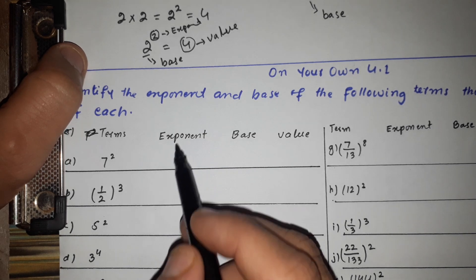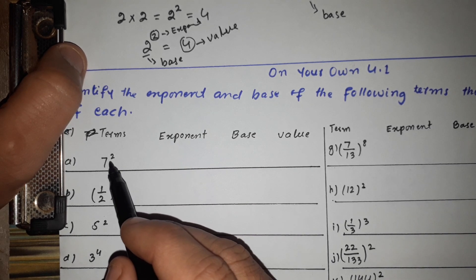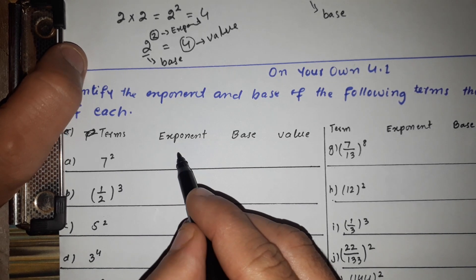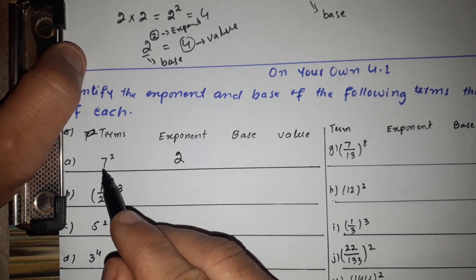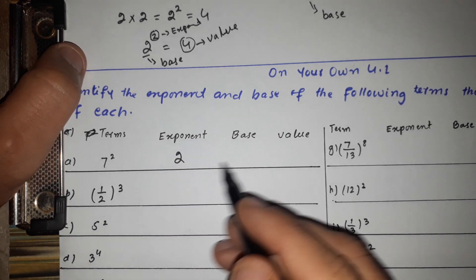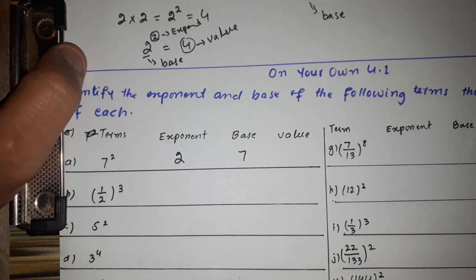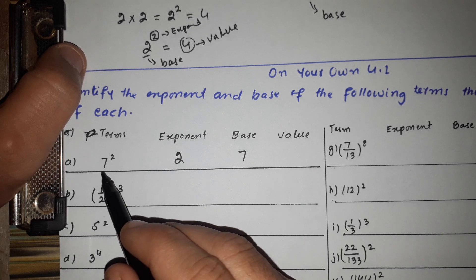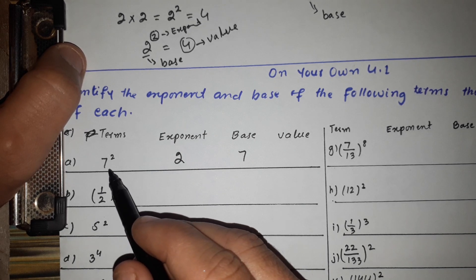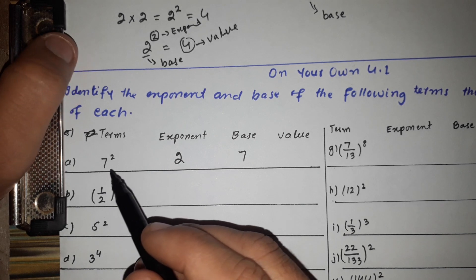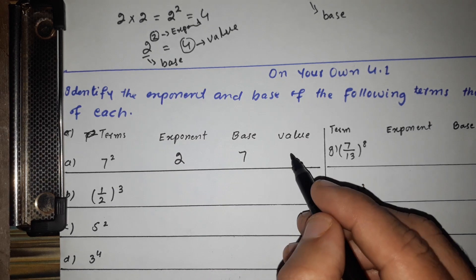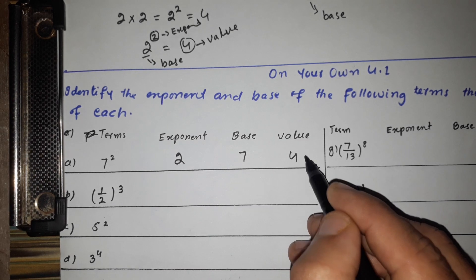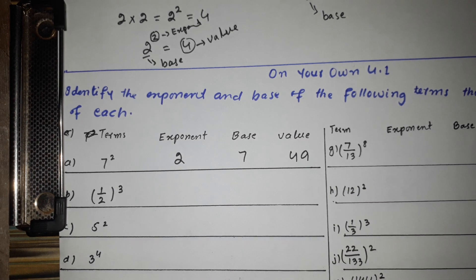The exponent is 2 and the base is 7. The value: we multiply 7 × 7, which is 49. So the value is 49.